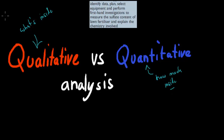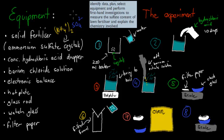In this video, we're going to talk about quantitative analysis. That's called gravimetric analysis — an example of that. The learning objective says: identify data, plan and select equipment, and perform a first-time investigation to measure the sulfate content of a lawn fertilizer.